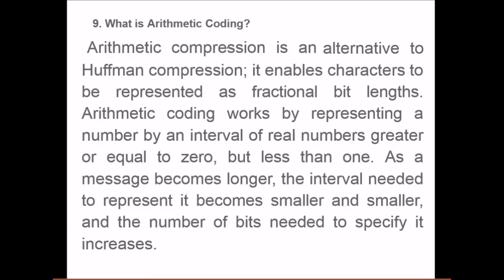What is arithmetic coding? Arithmetic compression is an alternative to Huffman compression. It enables characters to be represented as fractional bit lengths. Arithmetic coding works by representing a number by an interval of real numbers greater than or equal to zero but less than one. As the message becomes longer, the interval needed to represent it becomes smaller and smaller, and the number of bits needed to specify it increases.